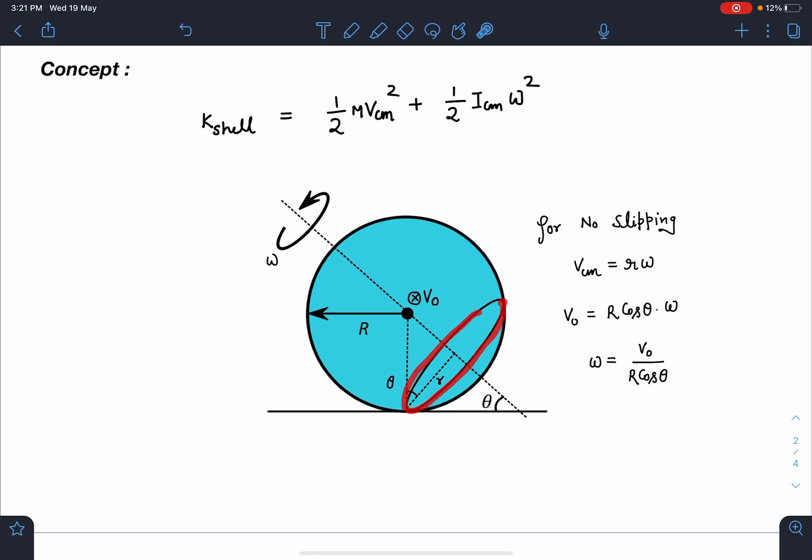Due to omega, this velocity r·ω will be coming out of the plane, and the translating axis has a velocity of v₀ into the plane. So I can write v_cm equals r·ω.